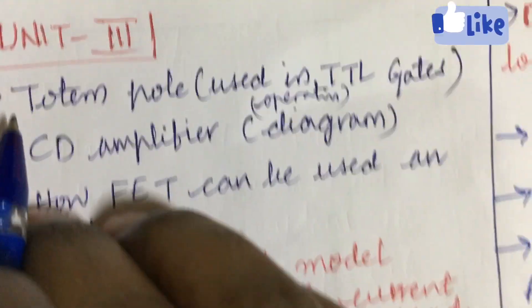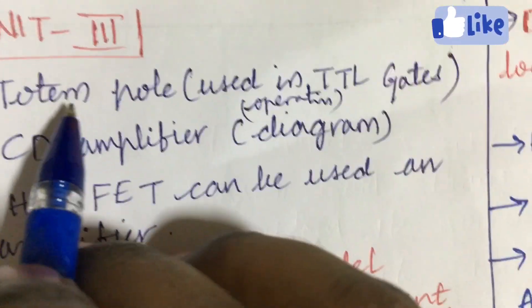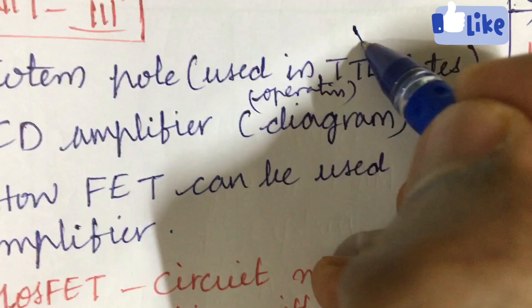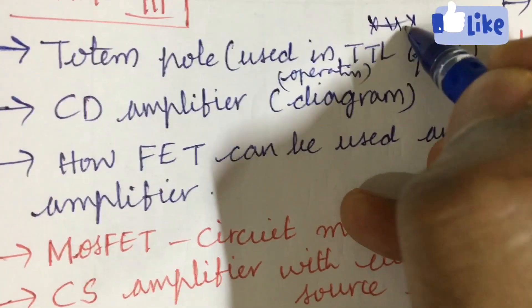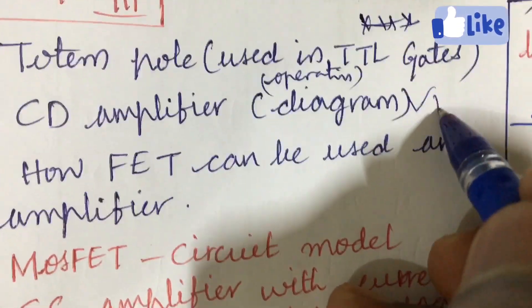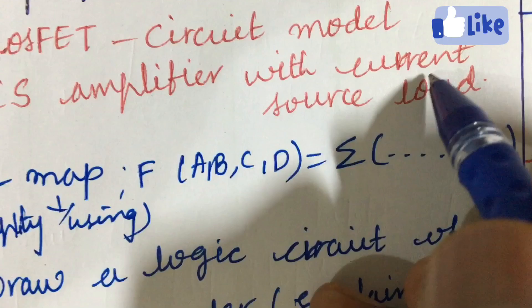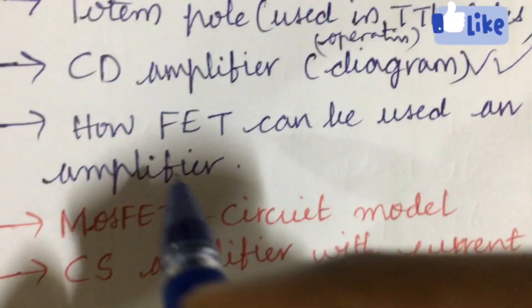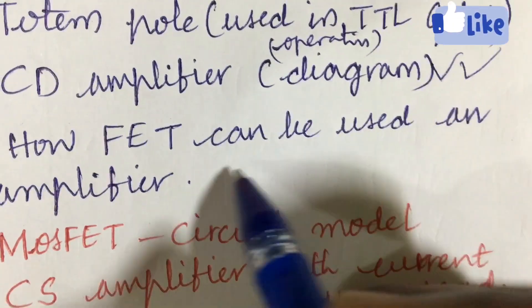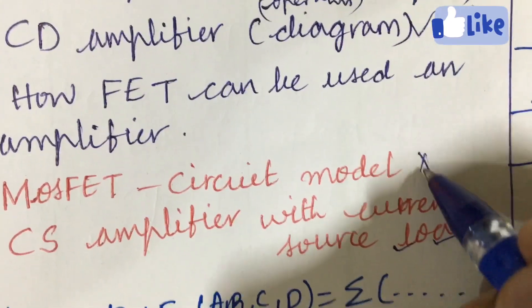Let's look at the fifth and sixth question. Totem pole using a TTL gate and its operation is one of the gunshot questions. CD amplifier and diagram as well as CS amplifier with current load, the source load, and how FET can be used as an amplifier and MOSFET circuit model is also asked several times.